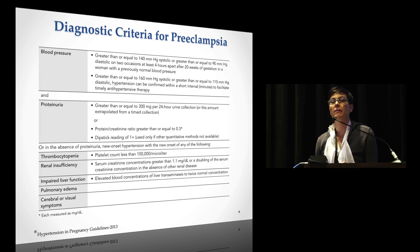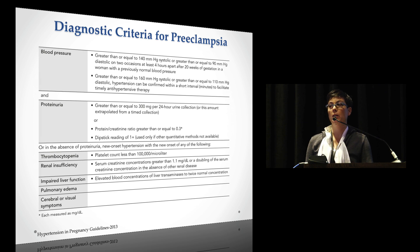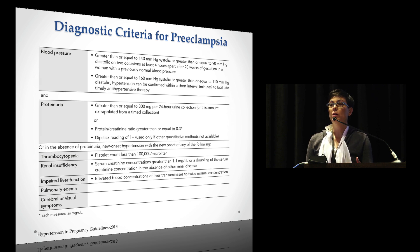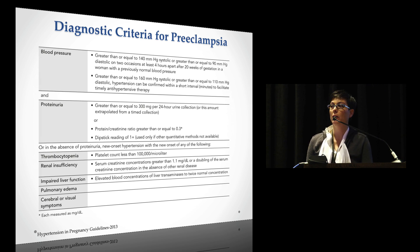The change is: in the absence of proteinuria, if you have new onset hypertension and any of these — thrombocytopenia, renal insufficiency, impaired liver function, pulmonary edema, or cerebral/visual symptoms — that can trump the proteinuria. You can still be preeclamptic without proteinuria. This gets us away from calling it 'atypical preeclampsia.' If you have thrombocytopenia or any one of those findings, you can still be considered preeclamptic.